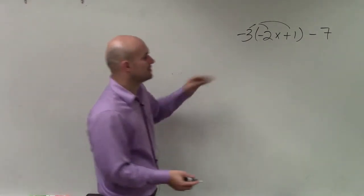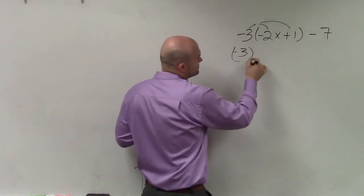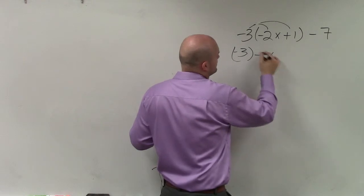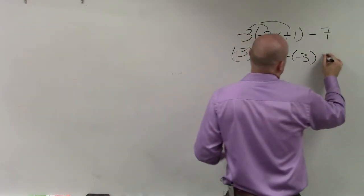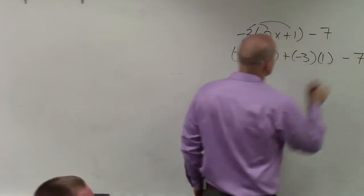So now I apply the distributive property. So I have -3 times -2x plus -3 times 1 minus 7.